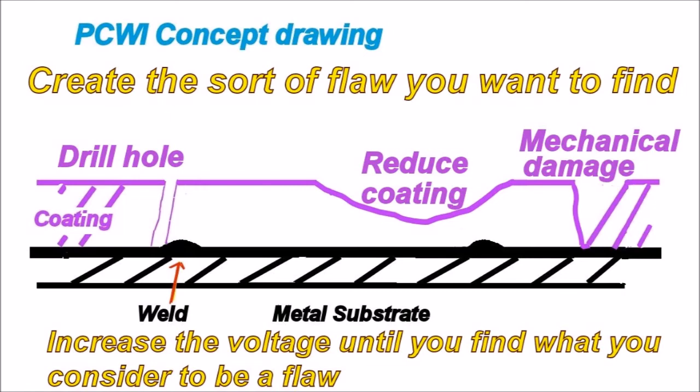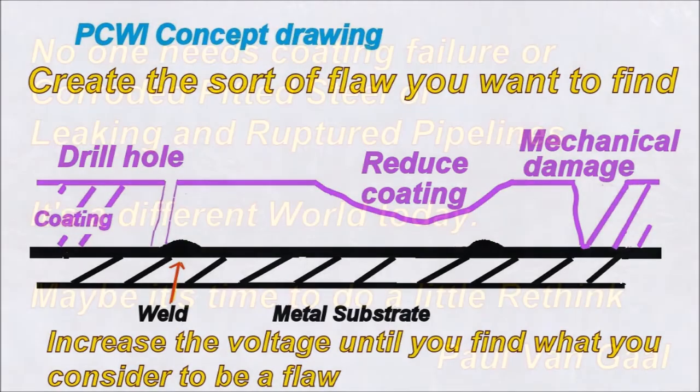Then you can also reduce the coating thickness and keep passing the probe over it until you actually burn through. It depends really what you're looking for as to what you consider as a flaw. You can mechanically damage it and then run the coil over it and keep increasing the voltage until you ultimately find it as a flaw. It's just something I think you should really be looking at.